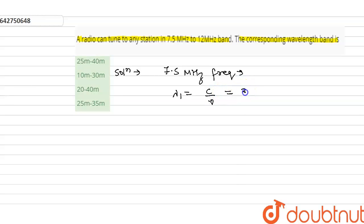Which is C is 3 into 10 raised to the power 8, and nu is given 7.5 into 10 raised to the power 6. On solving we will get 40 meter.